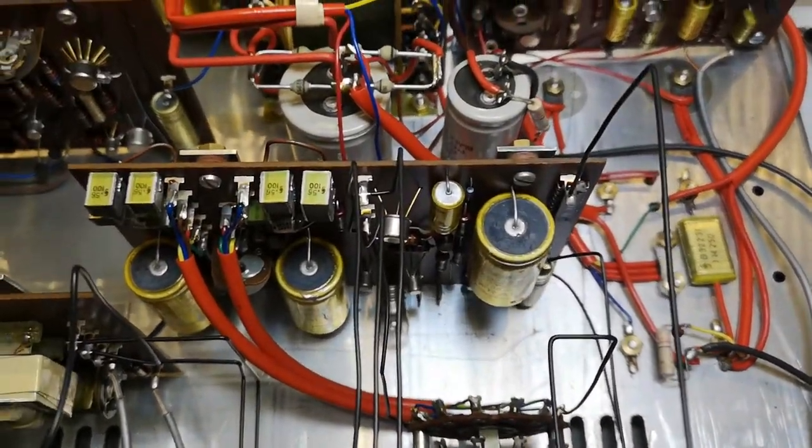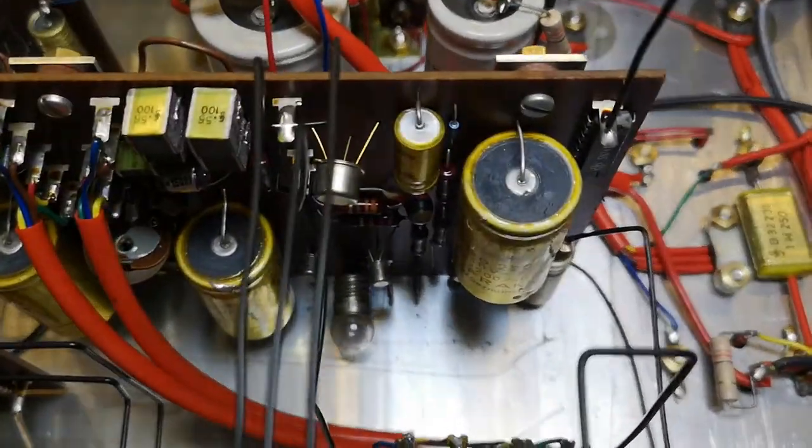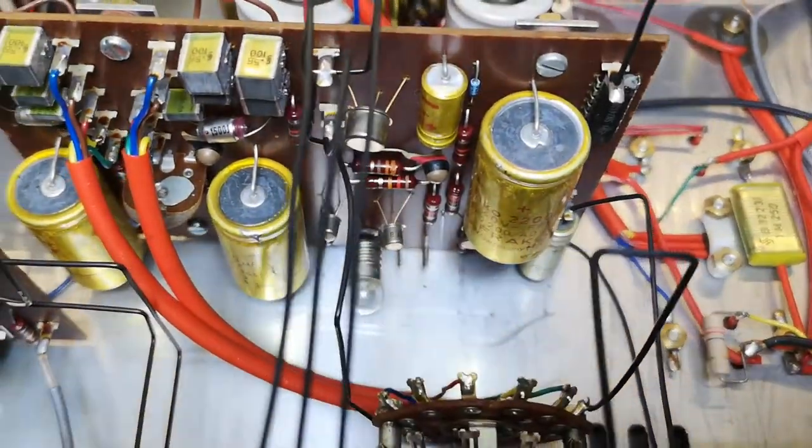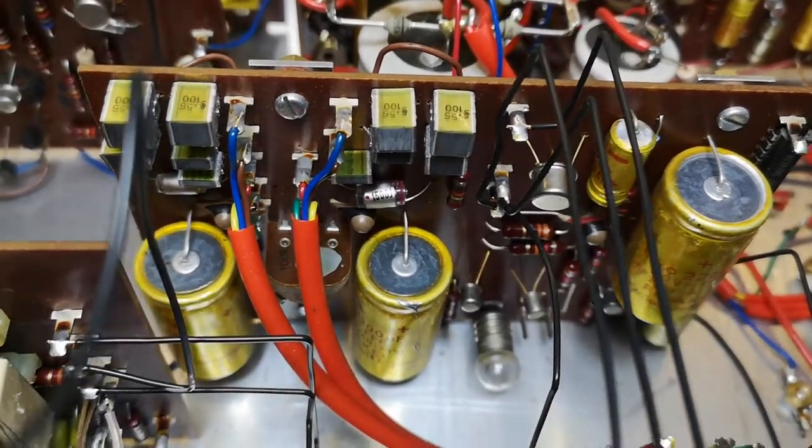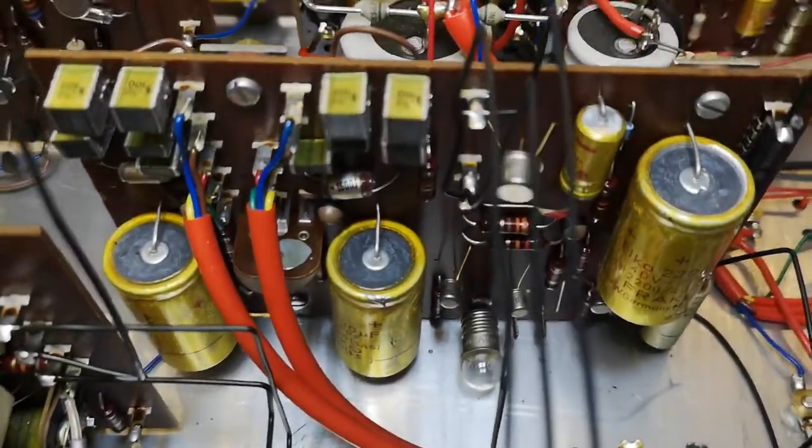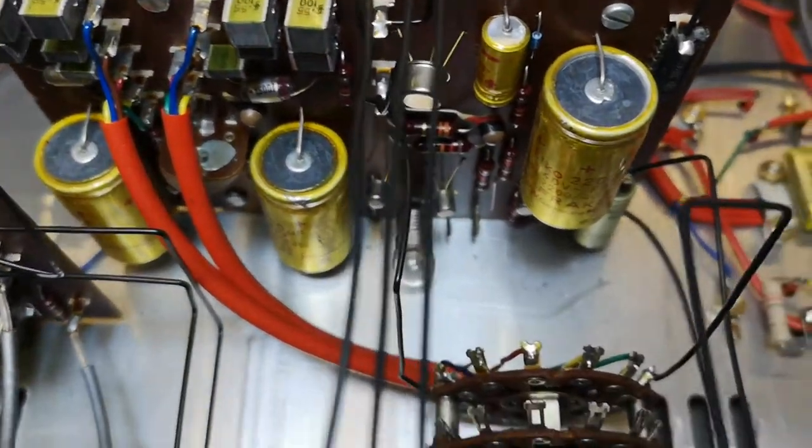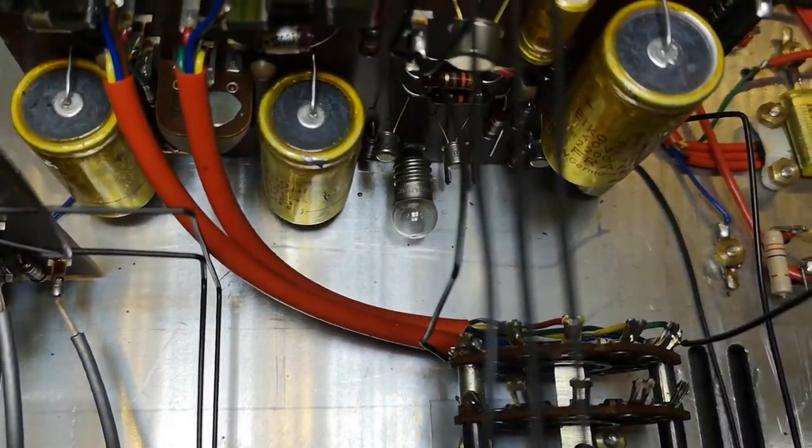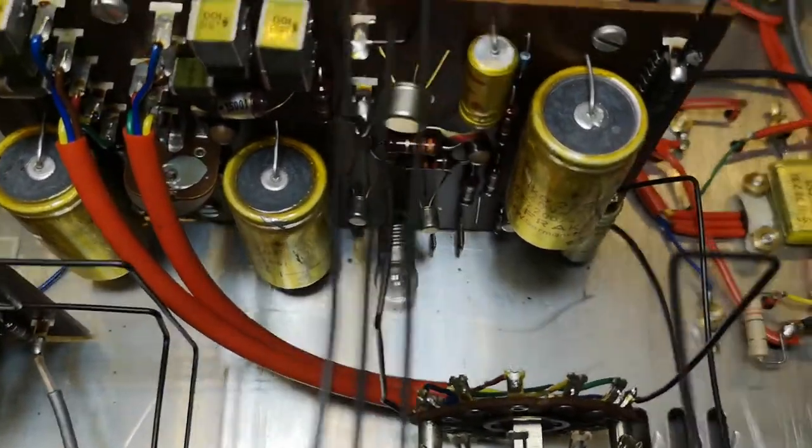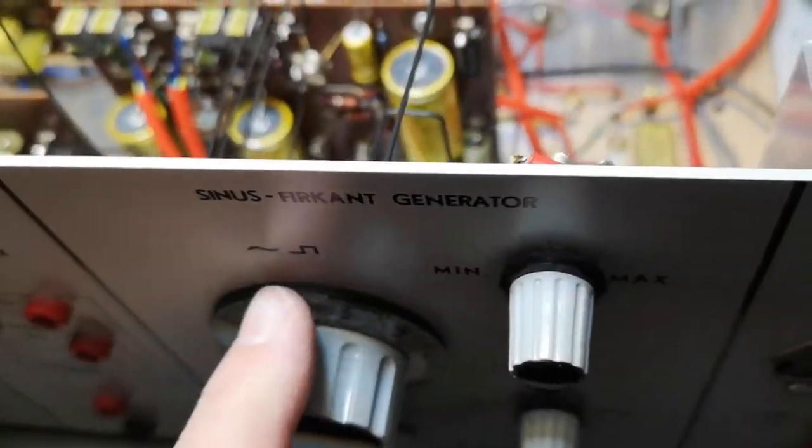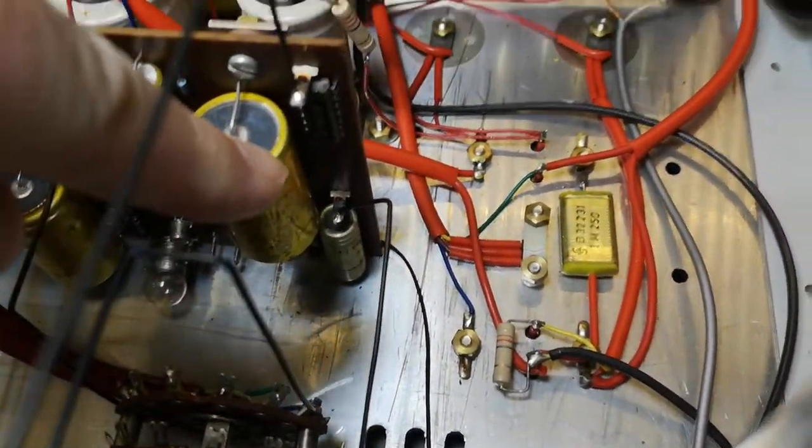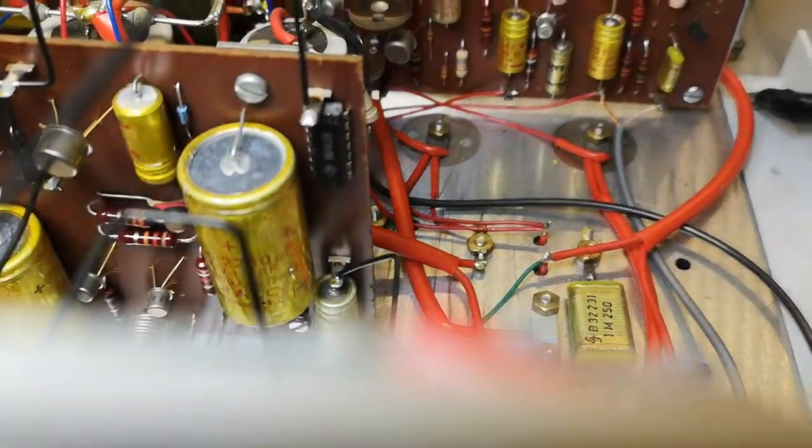The sine wave square wave oscillator is of course a Wien bridge. This is how you generate a real good sine wave. And look at the bulb for amplitude compensation.